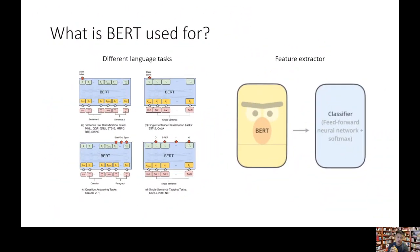What is BERT used for? There are two main ways BERT can be used. One way is different language tasks by changing the input and output slightly. For example, question answering: we feed it a question and a paragraph that contains the answer somewhere in it, and the output of BERT will be what section of that text is actually the answer.